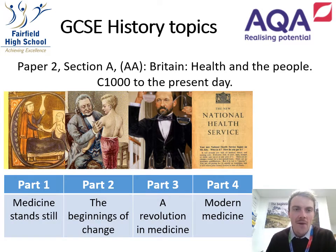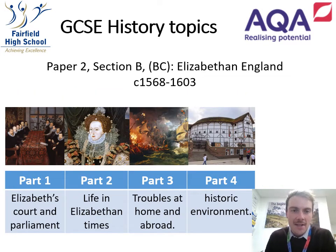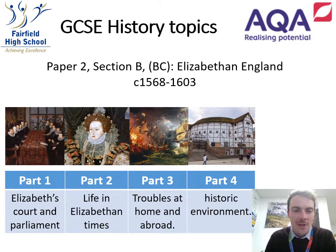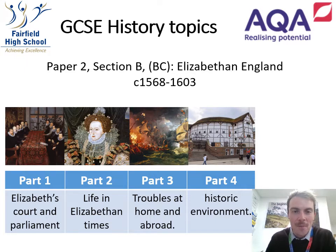Our final study is on Elizabethan England. We look at four parts: starting with her court and parliament and how she arranged her government, what it was like to live in these times, the troubles she had at home and abroad, her relationship with Catholic countries around Europe including the Spanish Armada. The final part is called the historic environment, which changes every year, and we study a place related to Elizabeth's reign.